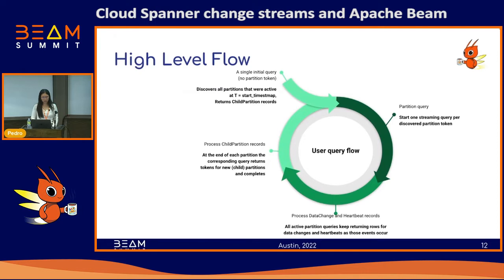For a high-level user flow for querying change streams: a user first executes an initial query in which the partition token field is set to null. This returns all change stream partitions that are active at a timestamp T and returns a list of child partition records. For each child partition token, the user executes a corresponding query, which returns data change records and/or heartbeat records. At the very end of each partition query, it returns a list of child partition records indicating the user needs to start new queries. This cycle continues until the user-specified end timestamp.